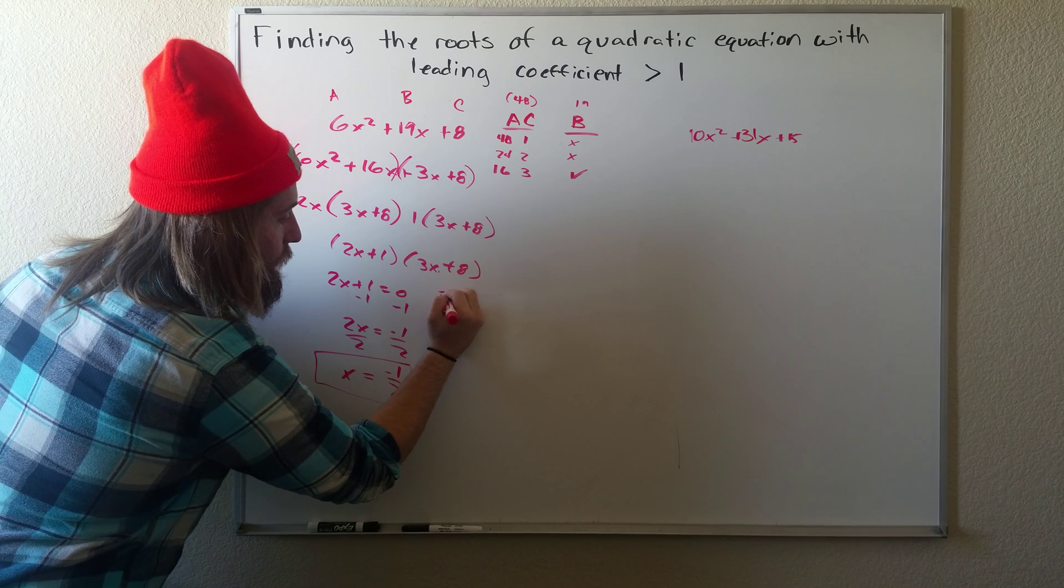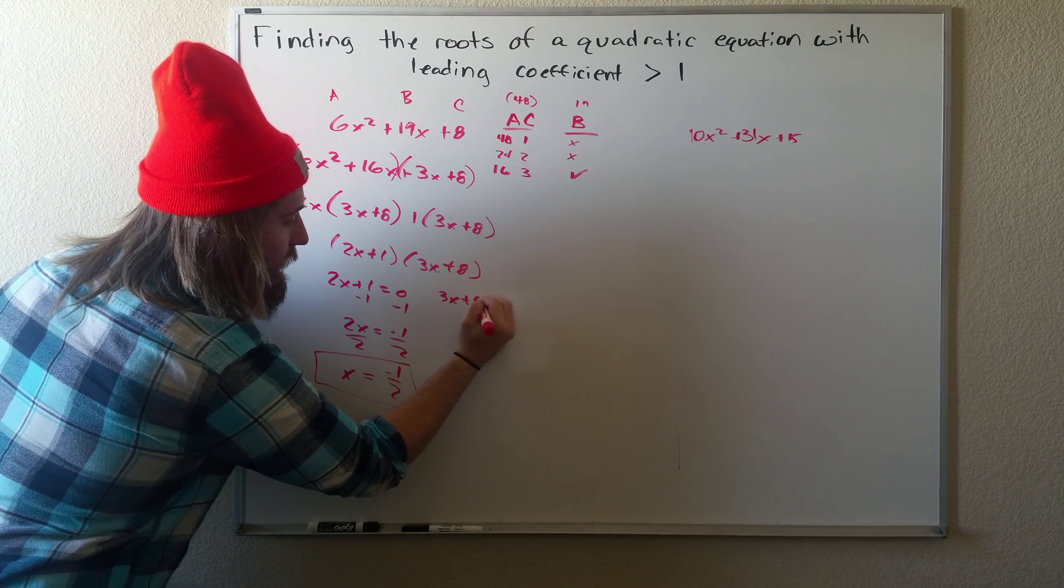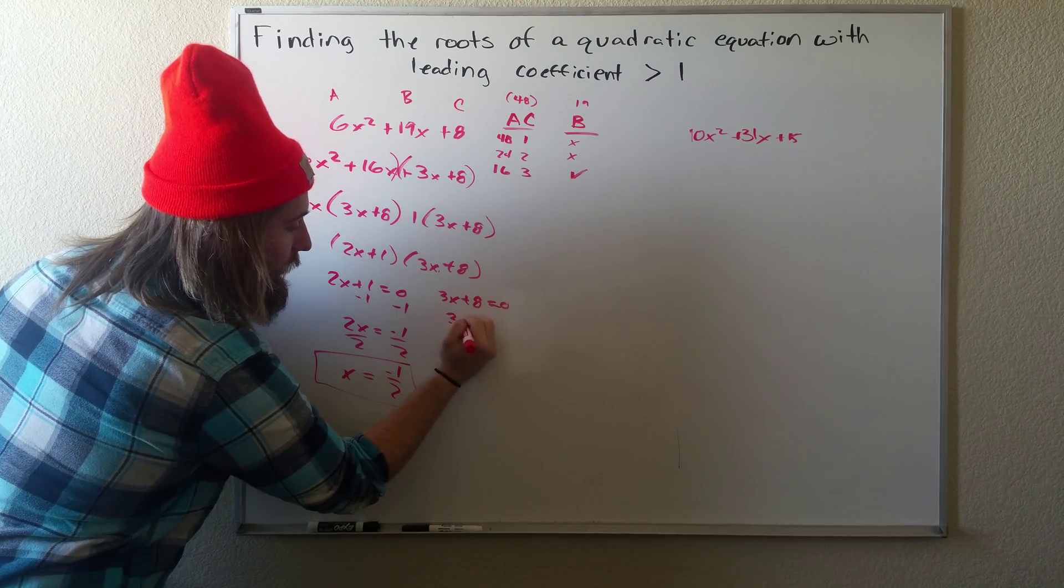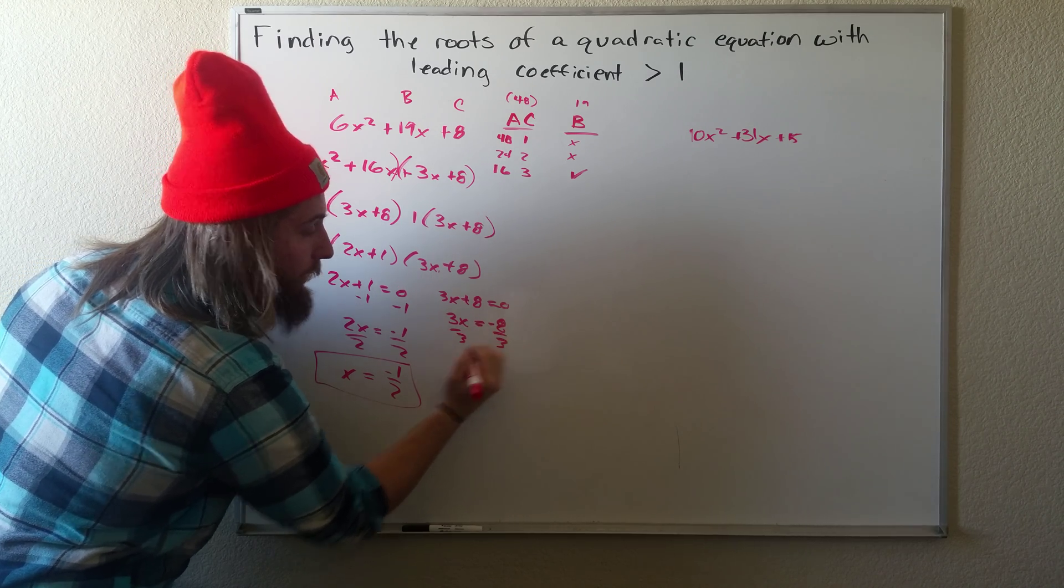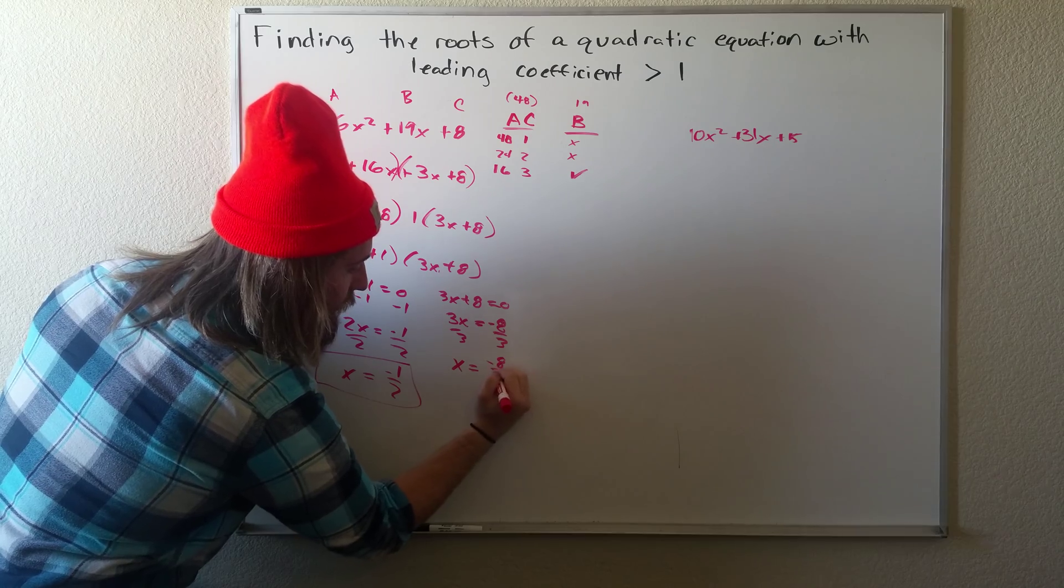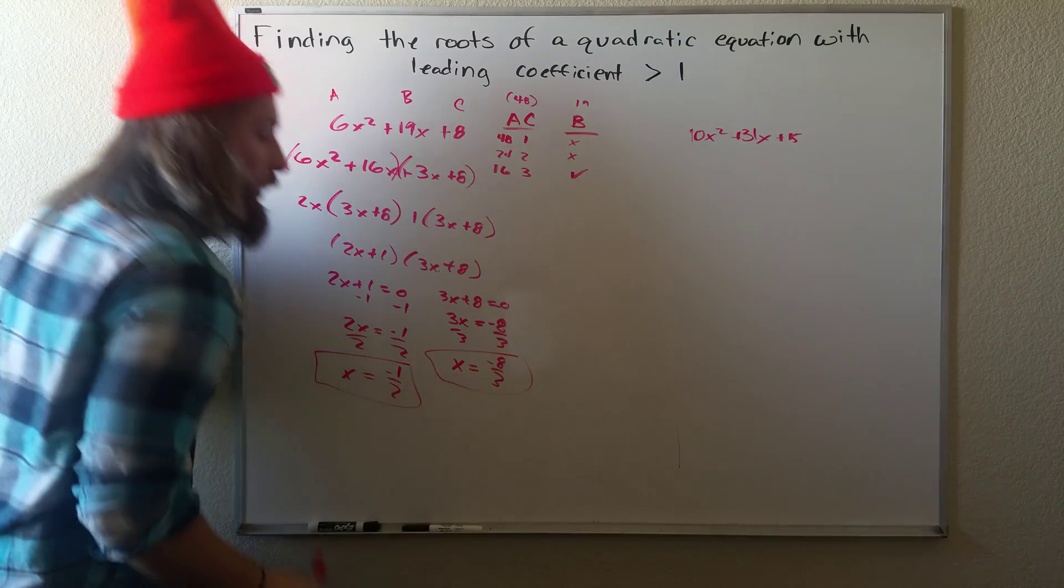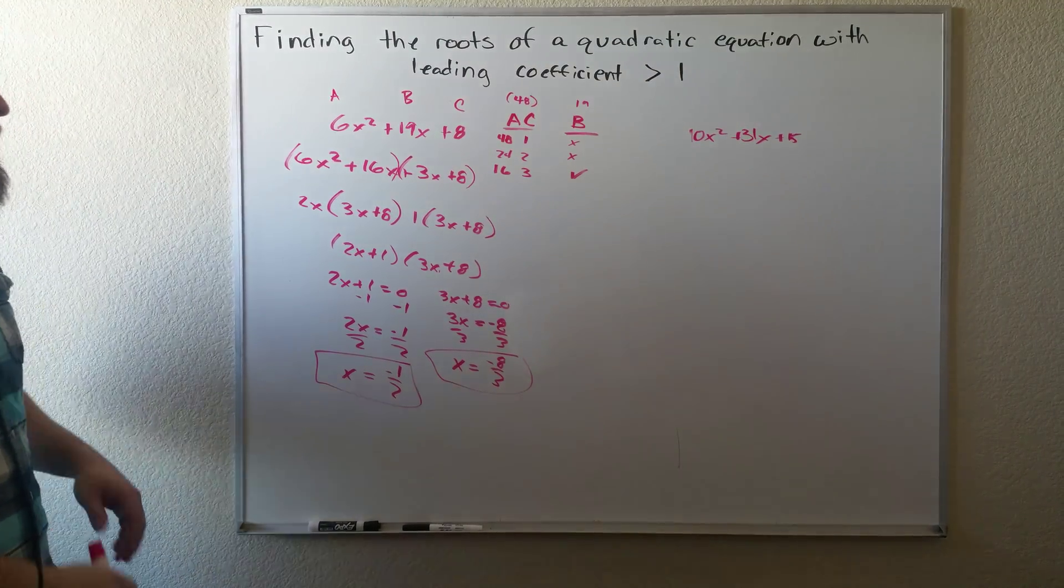If we do the same with this one, we get 3X plus 8 equals 0. 3X equals negative 8. Divide by 3. We get X equals negative 8 over 3. So those are our two roots for this problem.